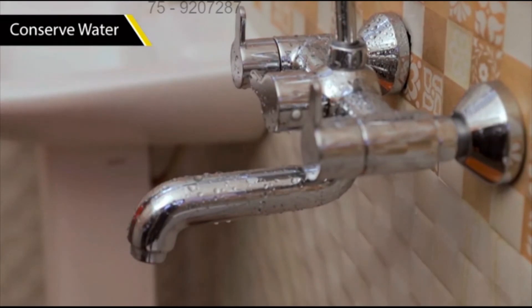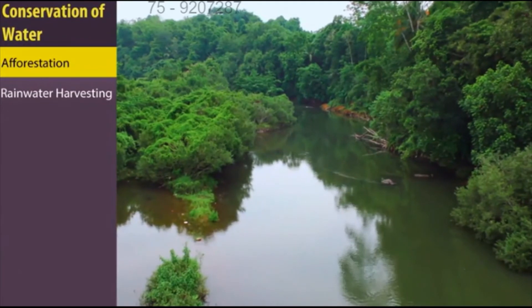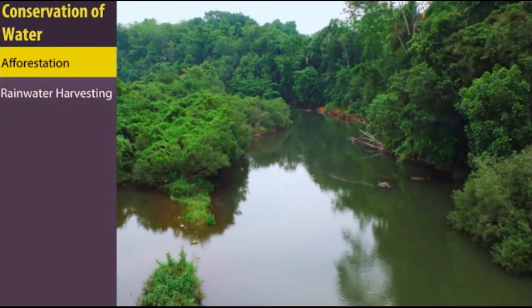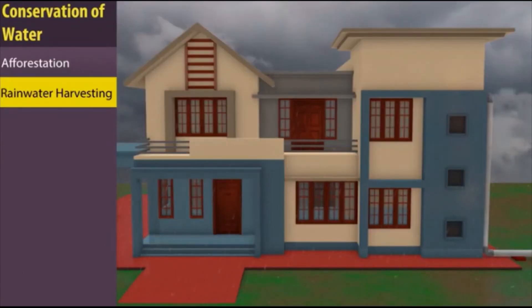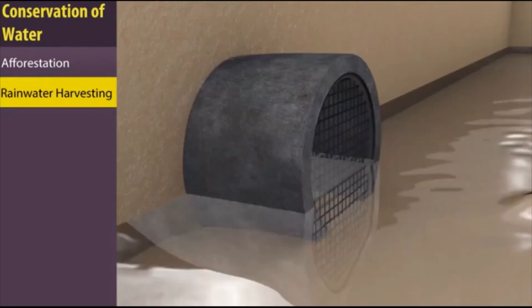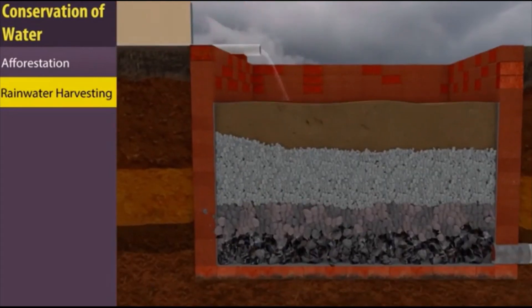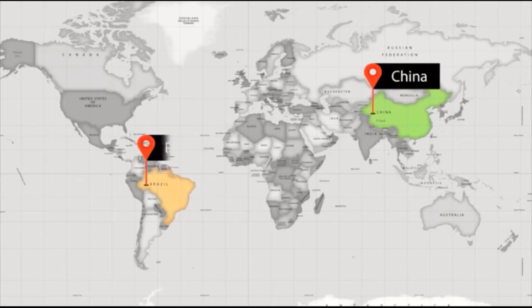Increasing forest cover and vegetation reduces surface runoff and replenishes underground water. Surface runoff can also be prevented through rainwater harvesting — a process where rainwater is collected from rooftops and stored for future use. Countries like China and Brazil have benefited considerably from rainwater harvesting, using it to provide even drinking water.